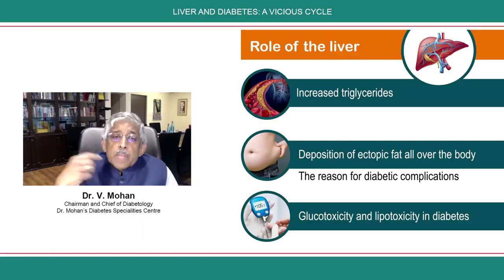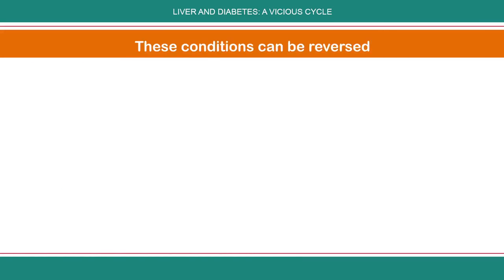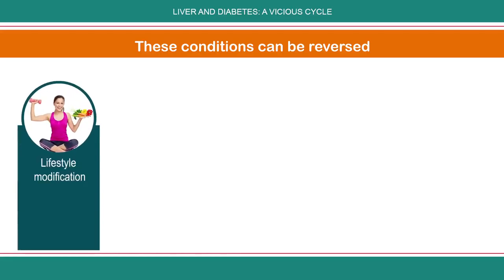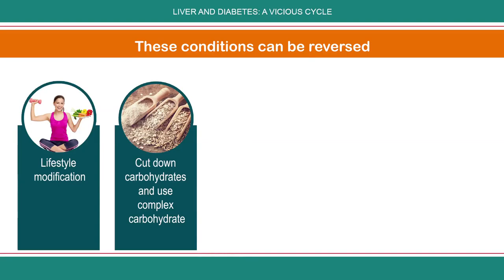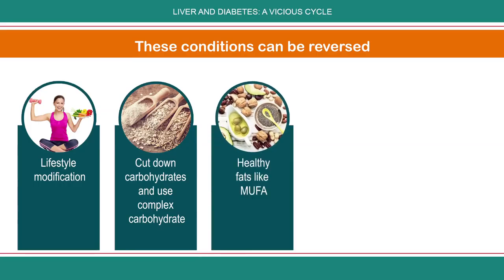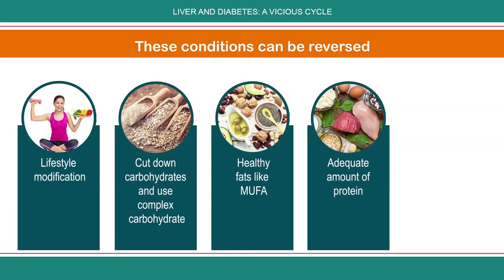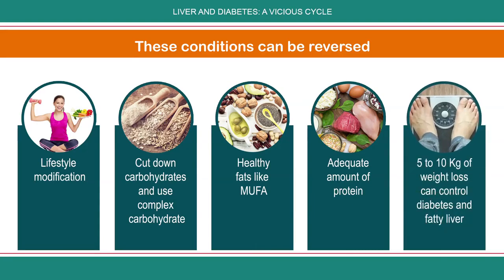All these are reversible if, number one, you follow very good lifestyle modification. Cut down carbohydrates because excess carbohydrates lead to chronic inflammation, and excess fat is also not good. Take the right amount of carbohydrate — complex carbohydrates rather than high refined carbohydrates. Take healthy fats like monounsaturated fats and enough protein. If you are able to reduce weight even by 5 to 10 kilograms, your diabetes will come down, the fatty liver will come down, and you start reversing all these processes.